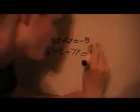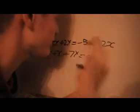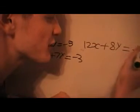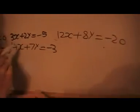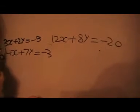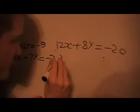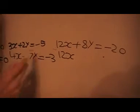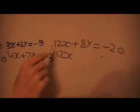So let's see what we'll get when we do that. We're going to get 12x plus 8y equals minus 20. And then we're going to multiply this one on the bottom by 3, because then we'll get a 12x in the bottom one. So we've got 12x in both of these, you see.